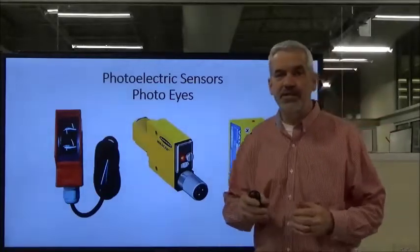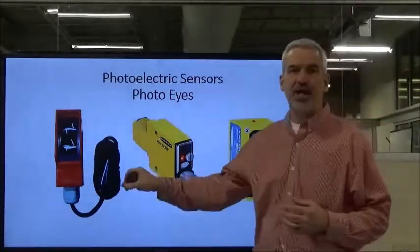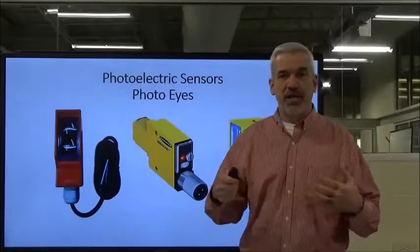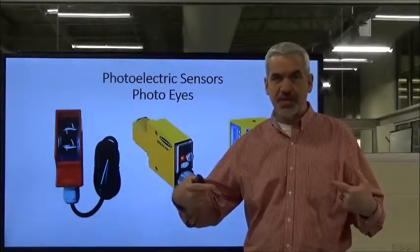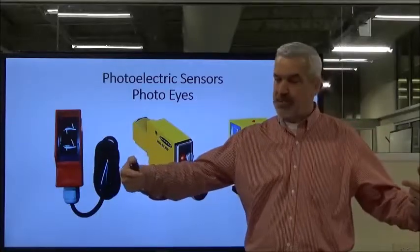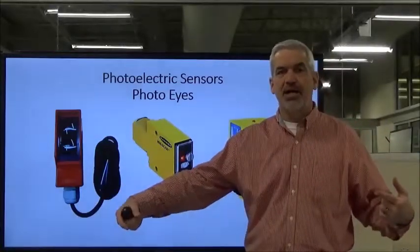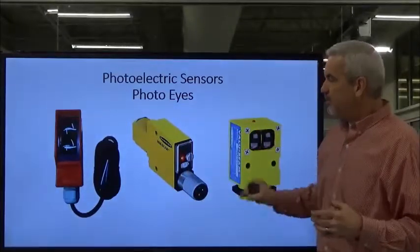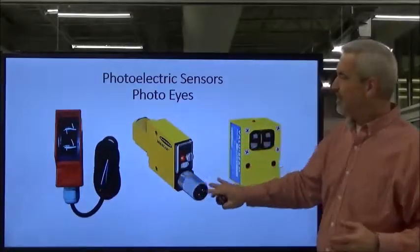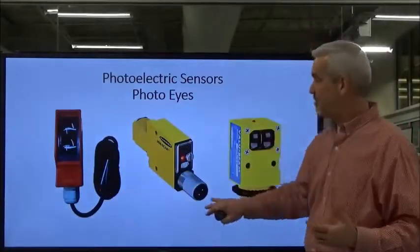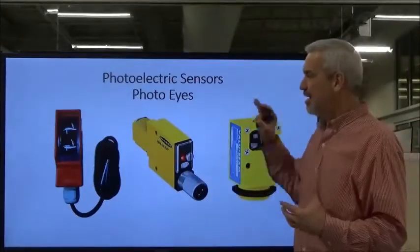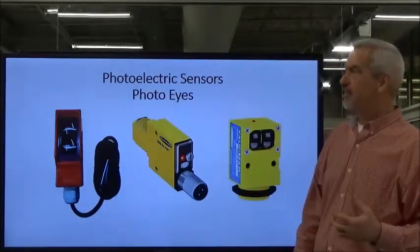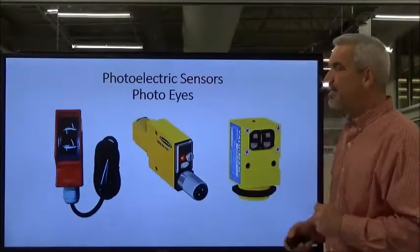The last sensor we're going to talk about is the photo-eye. A common example is your garage door — photo-eyes shoot across the opening, and by federal law, if something breaks that beam, the door automatically retracts. There are a ton of different manufacturers, shapes, and applications — Banner, Square D, Allen Bradley — but they all work basically the same way.